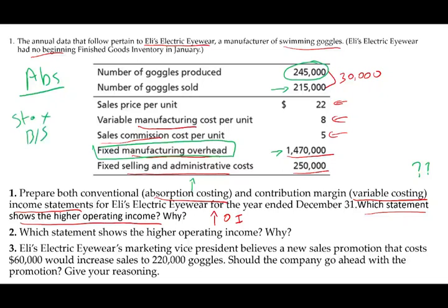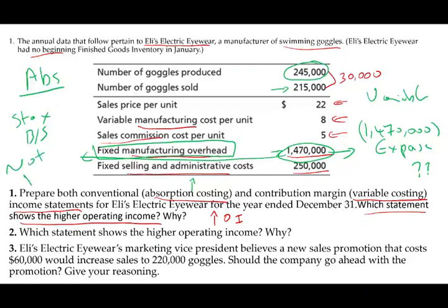That fixed overhead stays on the balance sheet because if you did not sell the units, you don't expense them. However, under variable costing, the entire $1,470,000 will be expensed on the income statement. So there is a difference: the whole amount is expensed under variable costing but not under absorption costing. As a result, absorption costing will have higher income and variable costing will have lower operating income. Let's prove that.